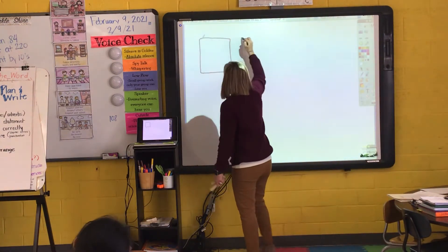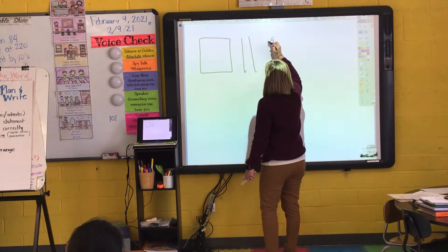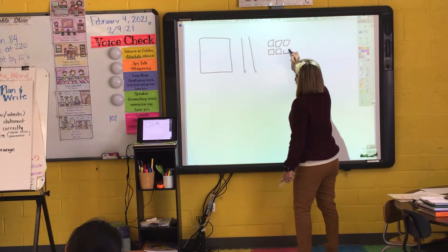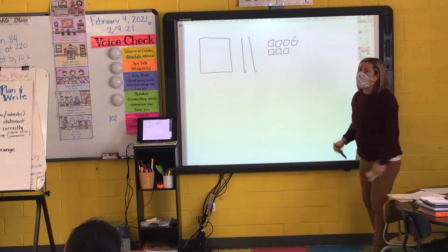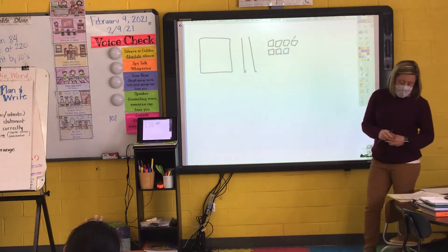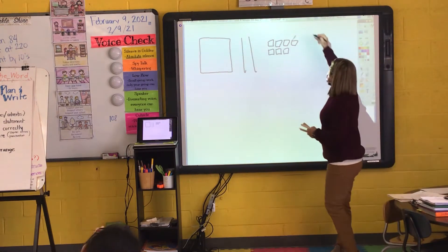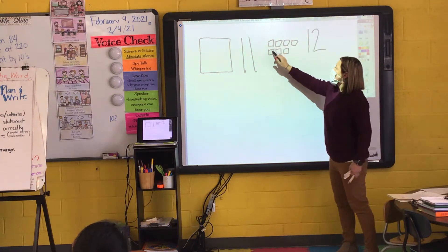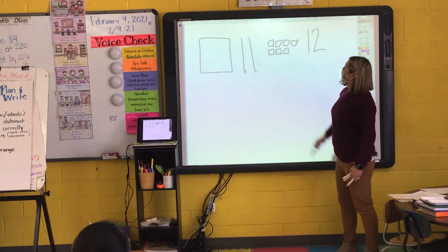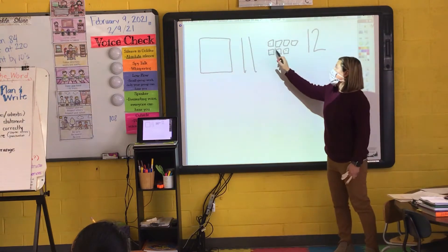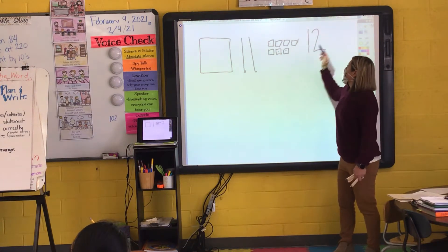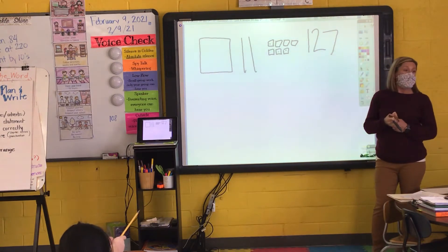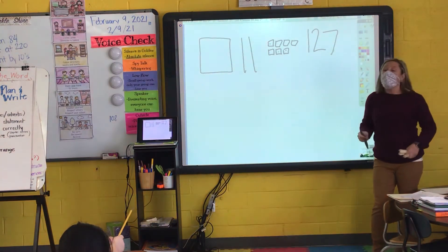Let's take a look at another picture. How many hundreds flats? One. How many ten sticks? Scarlet: two. Daniela, how many unit cubes? Eight — count again. Seven. What is my number? Logan, what's my number? 127.